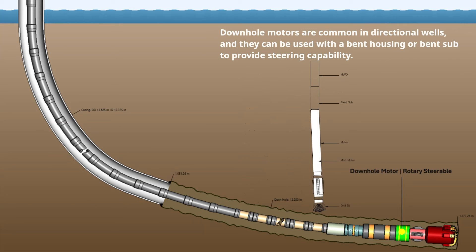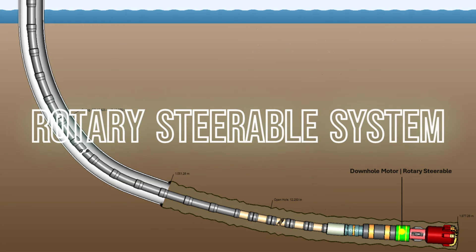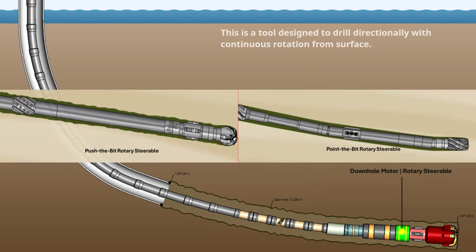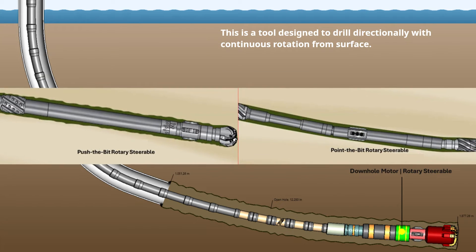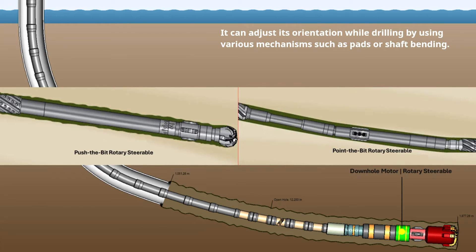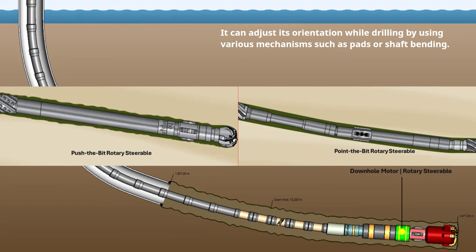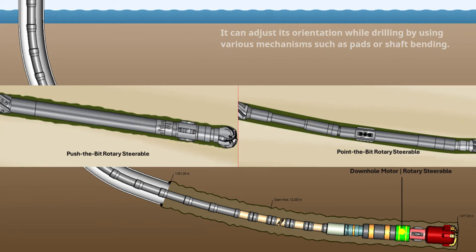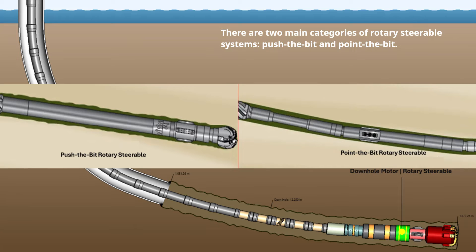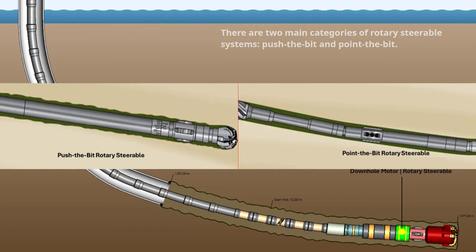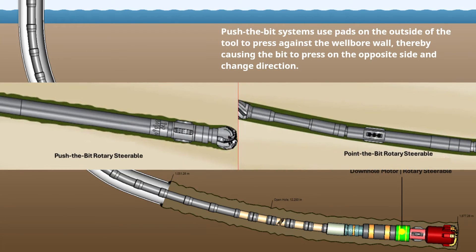Downhole motors are common in directional wells and can be used with a bent housing or bent sub to provide steering capability. A rotary steerable system is a tool designed to drill directionally with continuous rotation from surface. It can adjust its orientation while drilling by using various mechanisms such as pads or shaft bending. There are two main categories: push-the-bit and point-the-bit.